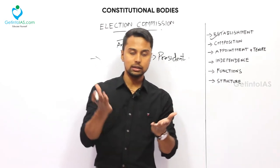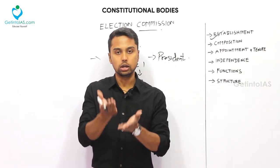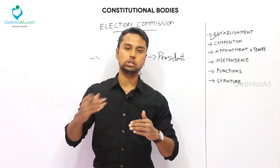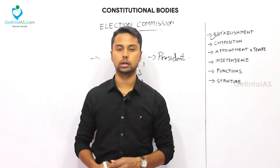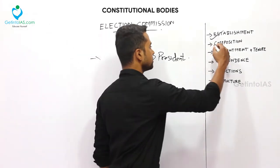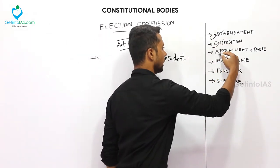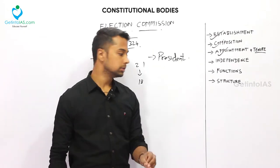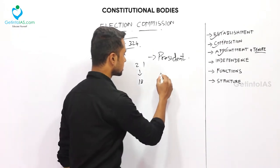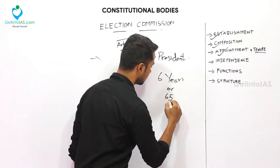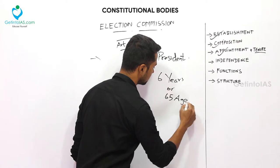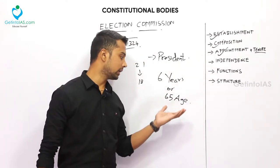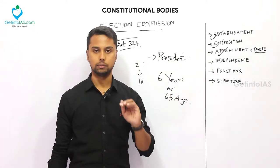All three Election Commissioners are equal — there is no high or low — and when there is a difference of opinion they go by majority or vote. Regarding tenure, the tenure of an Election Commissioner is six years or until they attain the age of 65, whichever is earlier.